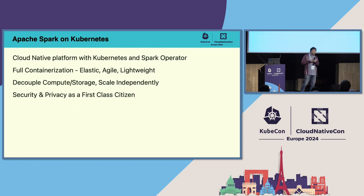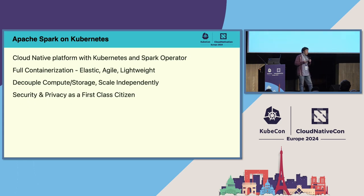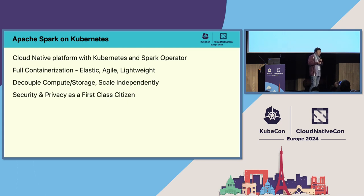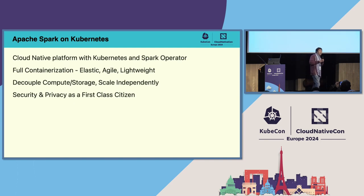Thirdly, we always try to treat security and privacy as first-class citizens on our platform. This is especially important when building a multi-tenant platform. With the help of Kubernetes — service accounts, cluster roles, and other security control services — we can very easily apply authentication tokens or authorization policies to every Spark port and even every data access operation inside the Spark workload.